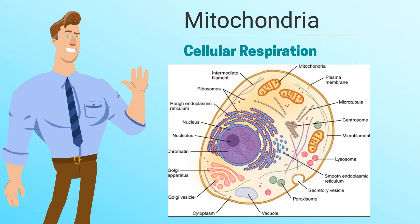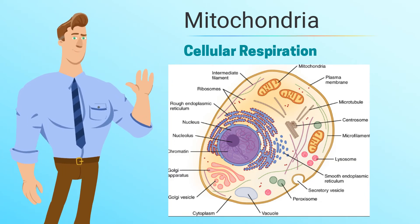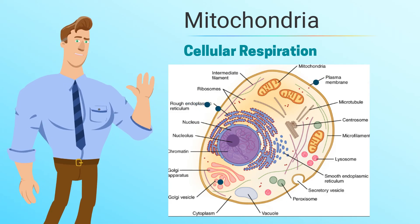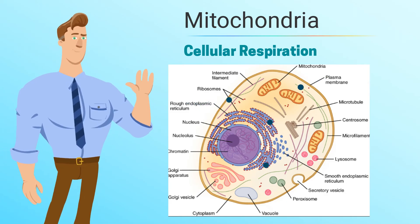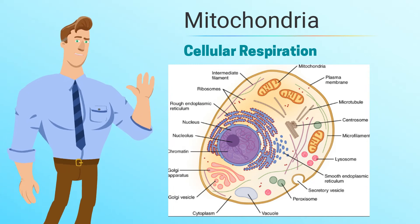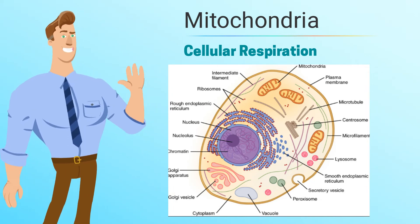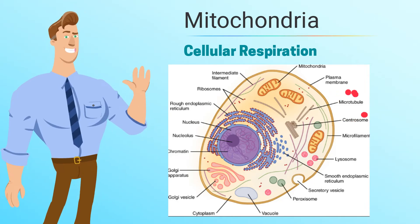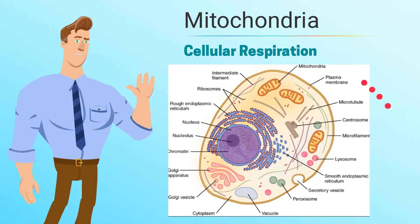If oxygen has a higher concentration outside of the cell, it will diffuse or move into the cell. And if carbon dioxide has a greater concentration inside the cell, it will move out of the cell by diffusion.